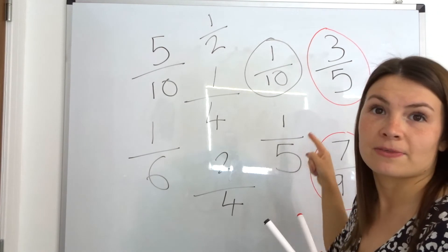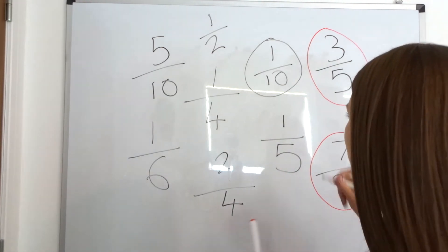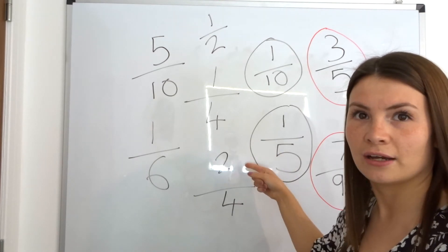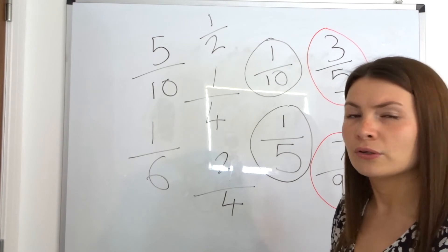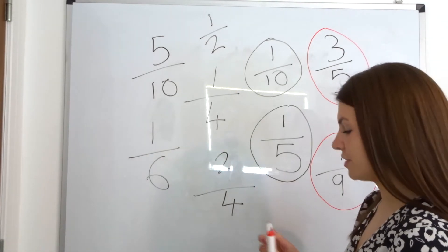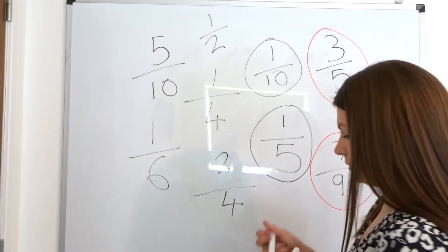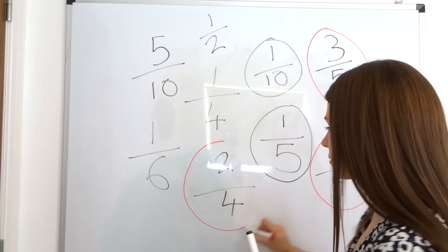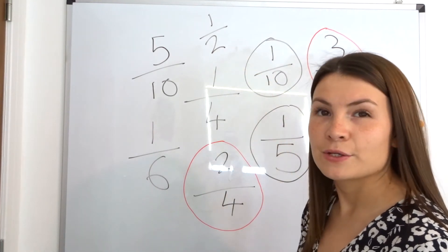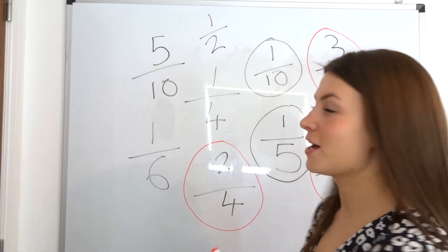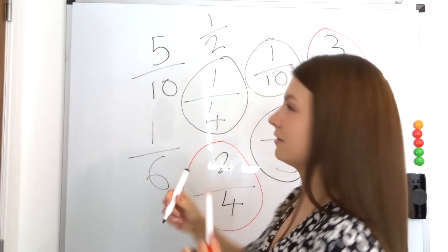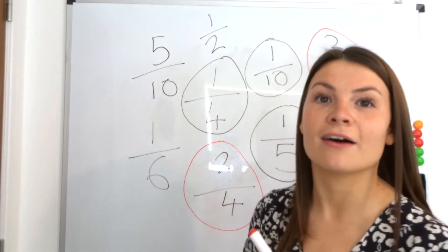And then we've got one fifth - unit or non-unit? Good - it's a unit fraction because again we've got one as the numerator. Here we've got two on the top and four on the bottom - we don't say two fourths, we say two quarters. So two quarters - is that a unit fraction or a non-unit fraction? Good - it is a non-unit fraction because the number on the top is bigger than one. And here we've got one quarter - is that a unit fraction or a non-unit fraction? A unit fraction - well done.